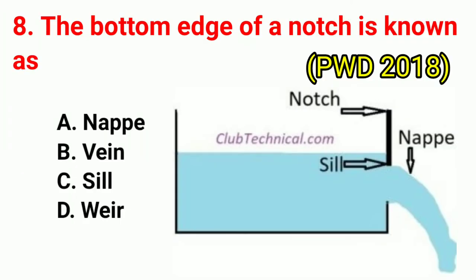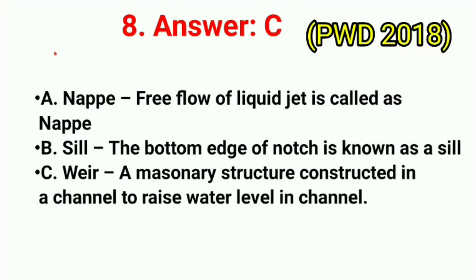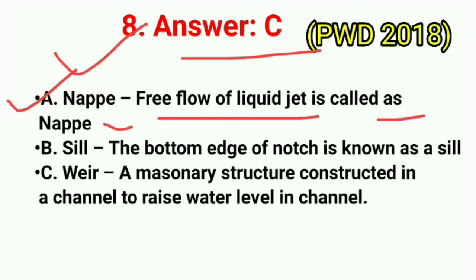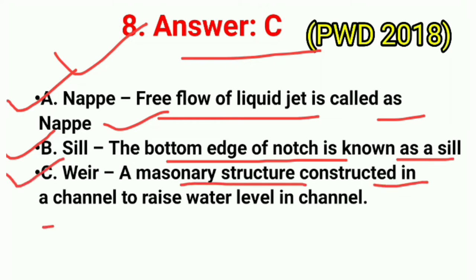Question No. 8. The bottom edge of a notch is known as? Correct answer is option C: sill. The free flow of liquid jet over a notch is called nappe. The bottom edge of the notch is known as sill. A weir is a masonry structure constructed in a channel to raise the water level in the channel.